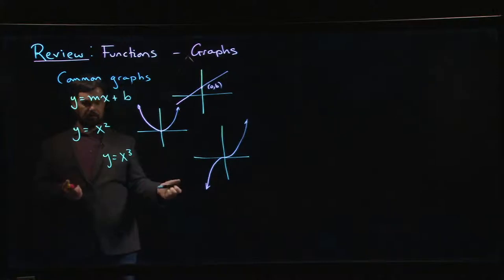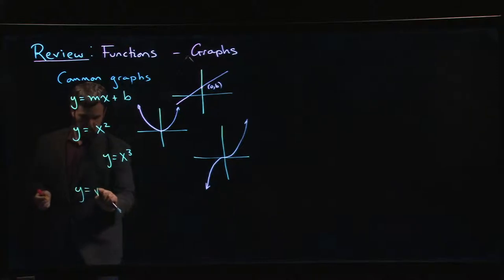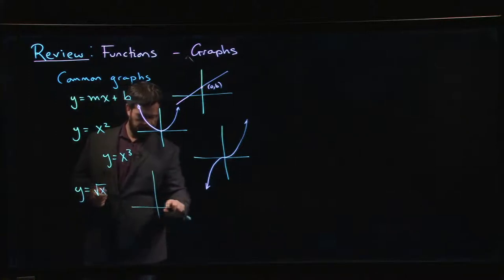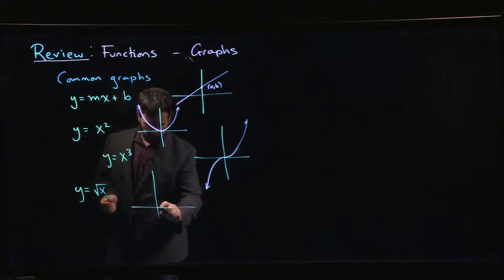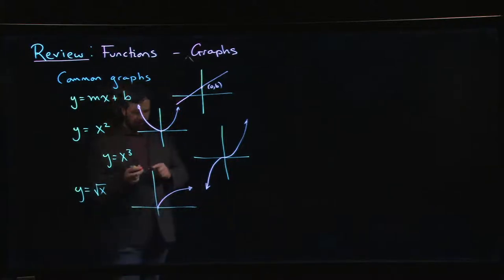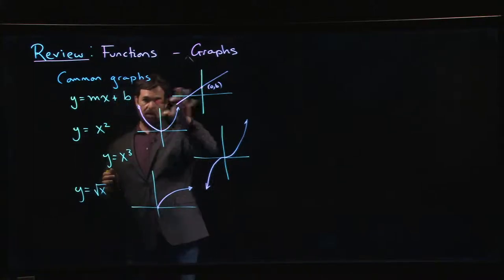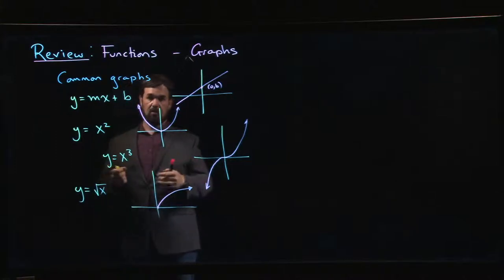With the cubic and other power functions, integer power functions tend to look like variations on these. You could also look at root functions. We could look at y equals the square root of x. Now of course here there's a domain issue. This is only defined when x is bigger than or equal to 0, so we can't plot it for negative x. For x bigger than or equal to 0 it looks like this.